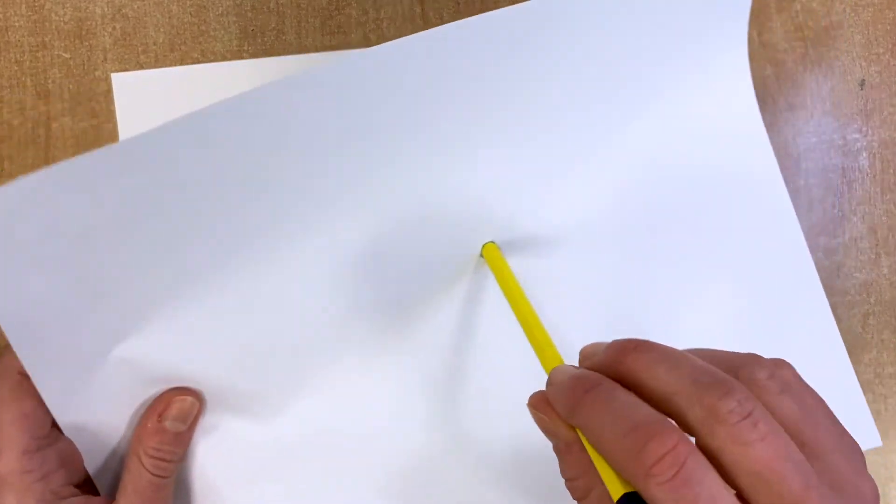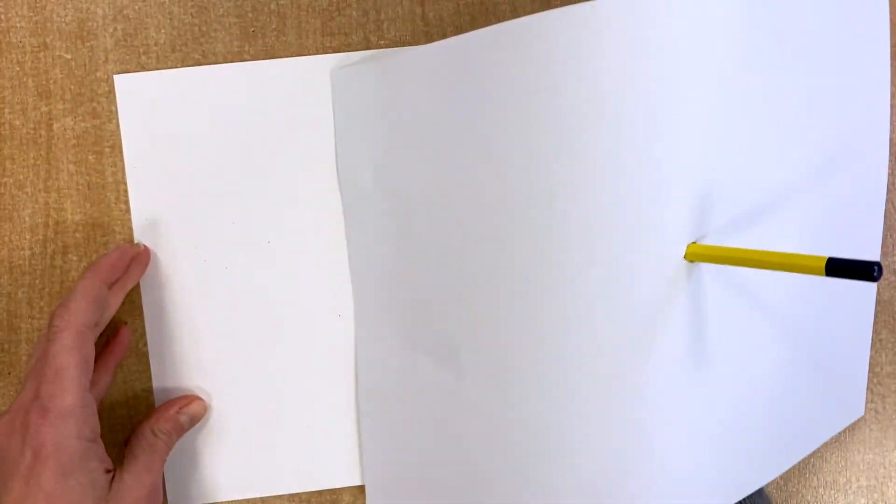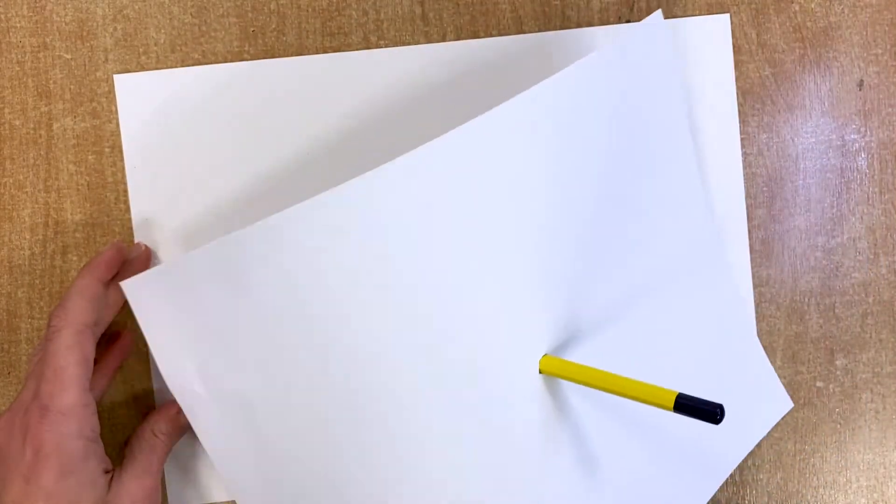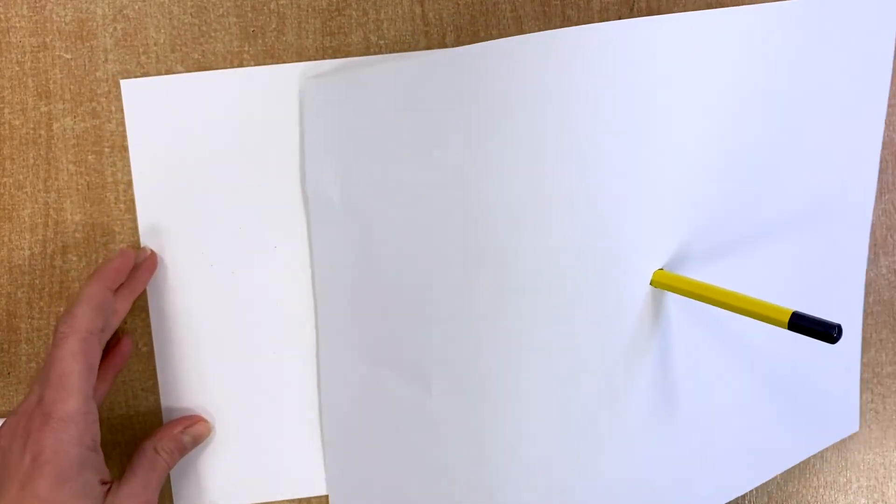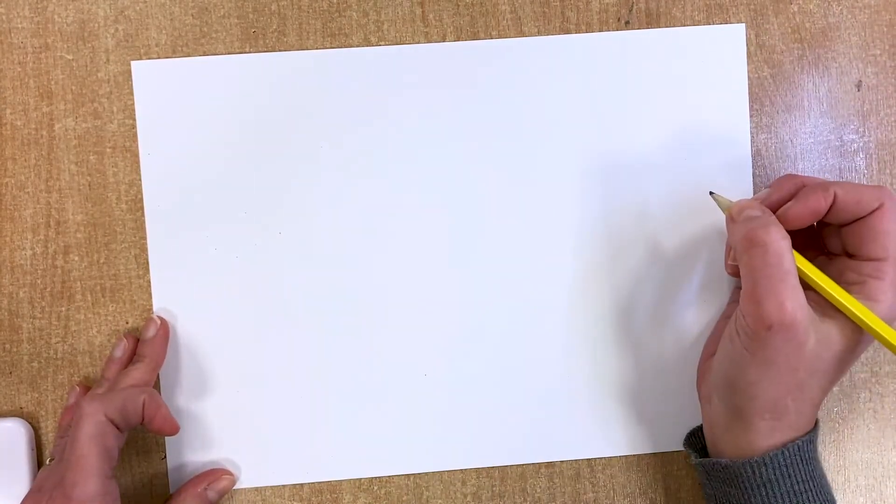A quick trick to ensure that you do truly a blind drawing is to get a sheet of paper and put your pencil through it, and then draw like this. Then it will hide your drawing as you go along so you're not attempting to look. For the purpose of this demonstration, I will be good and will not look, but I will get rid of the sheet so you can see what I'm doing.